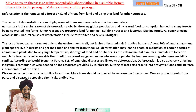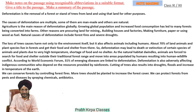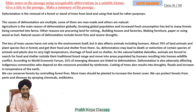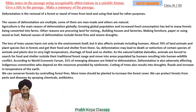The loss of trees causes harm not only to the environment itself but also affects animals including humans. About 70% of land animals and plant species live in forests and get their food and shelter from there. Deforestation may lead to the death or extinction of certain species of animals and plants due to very high temperature, shortage of food, and no shelter.